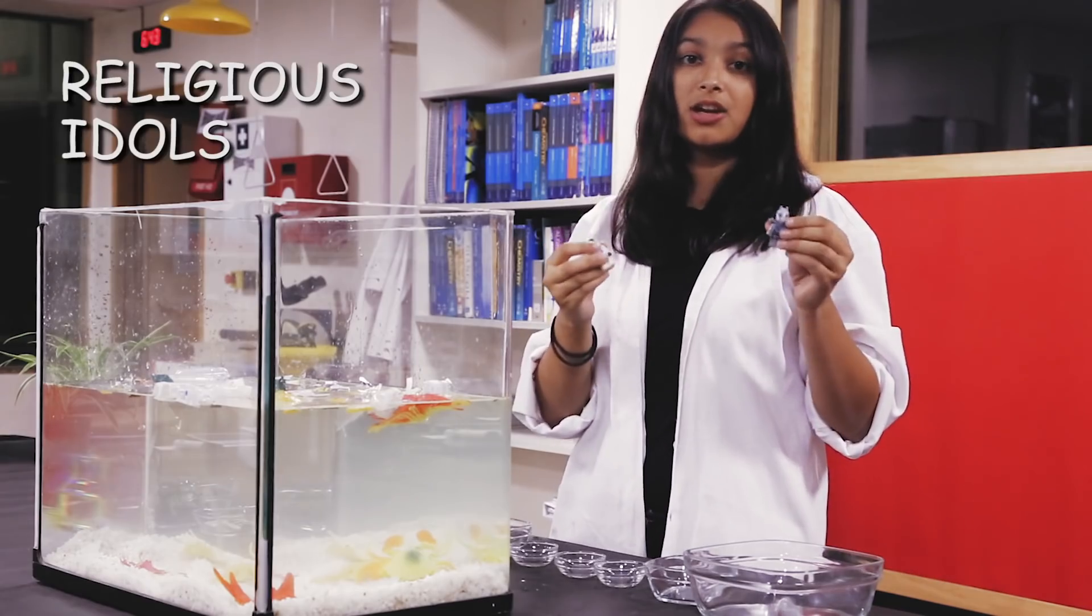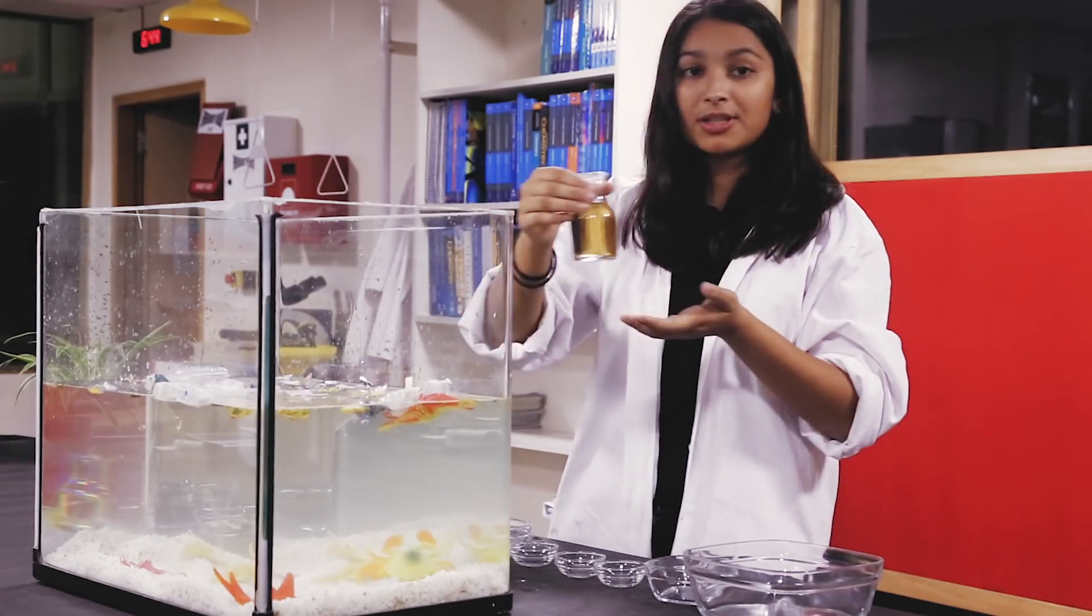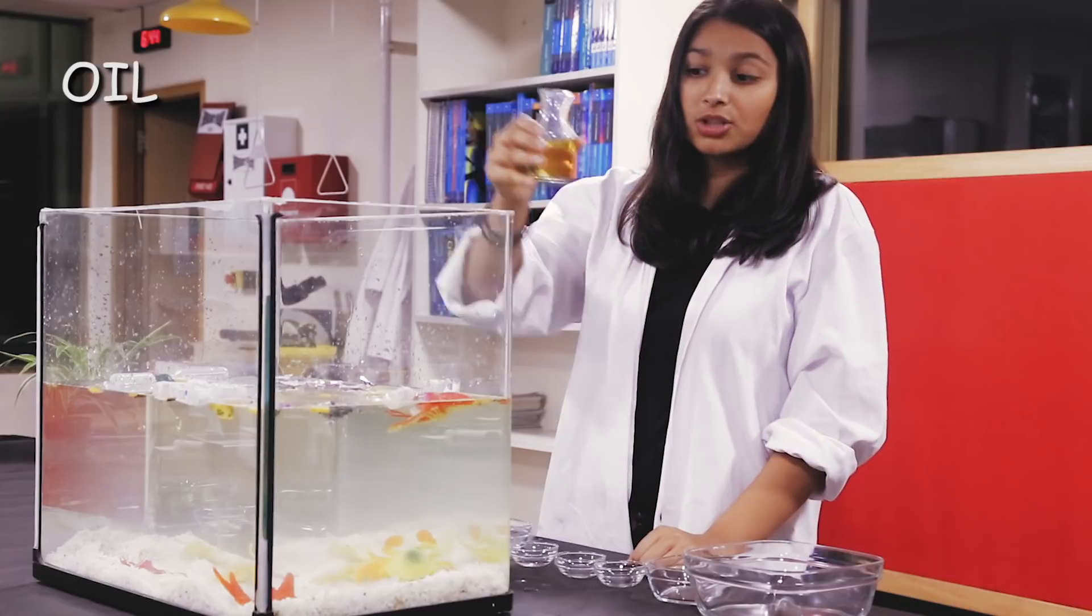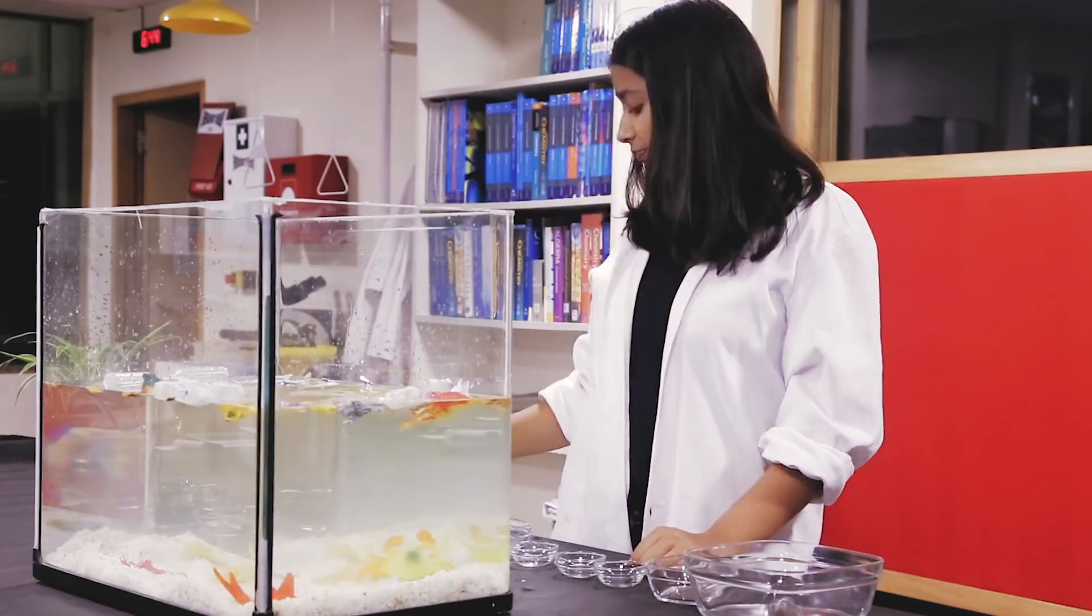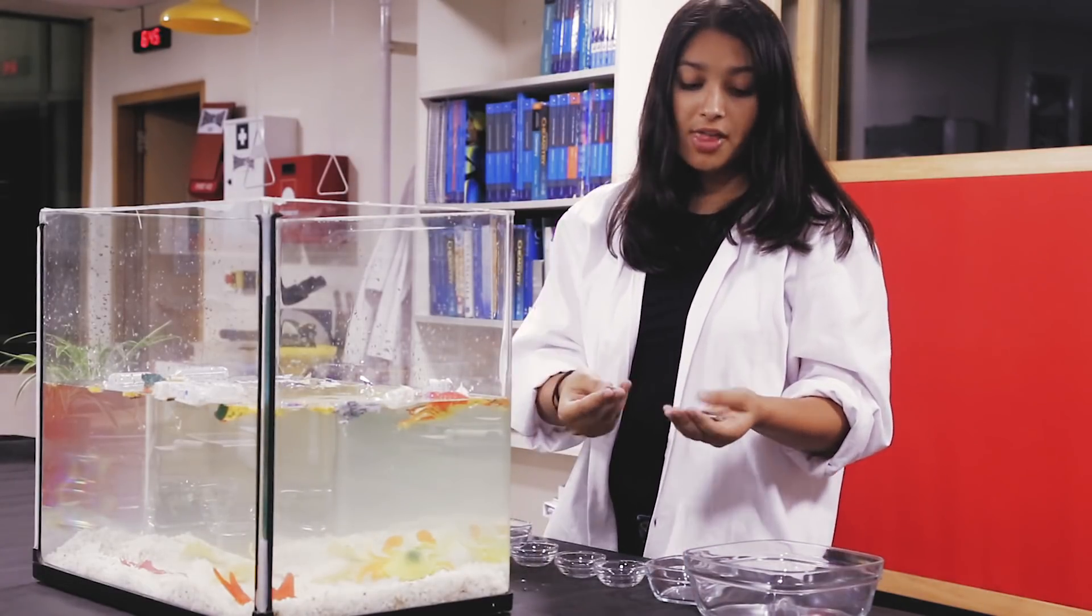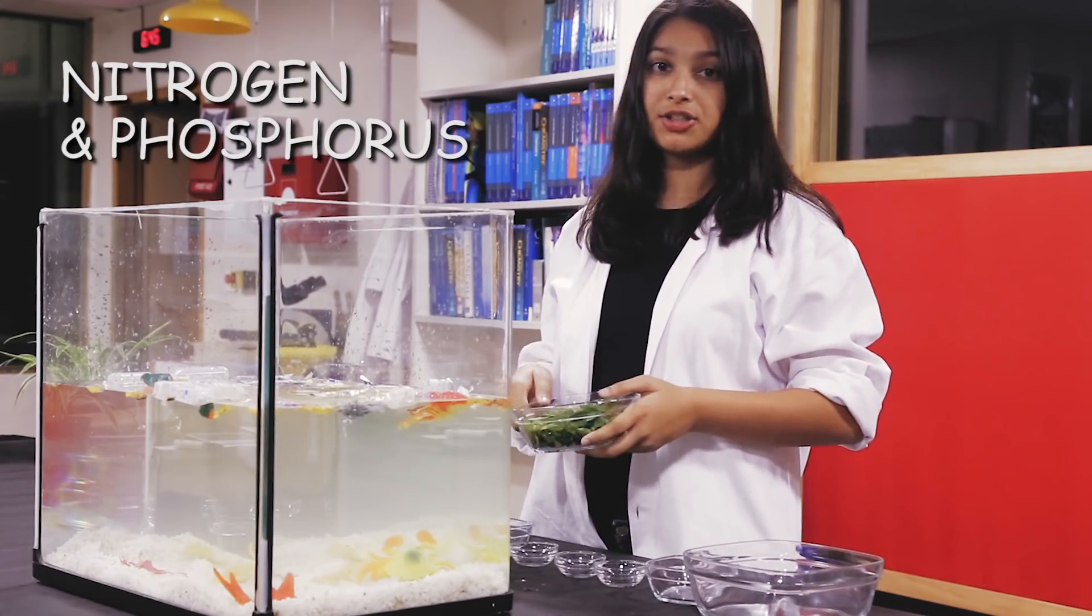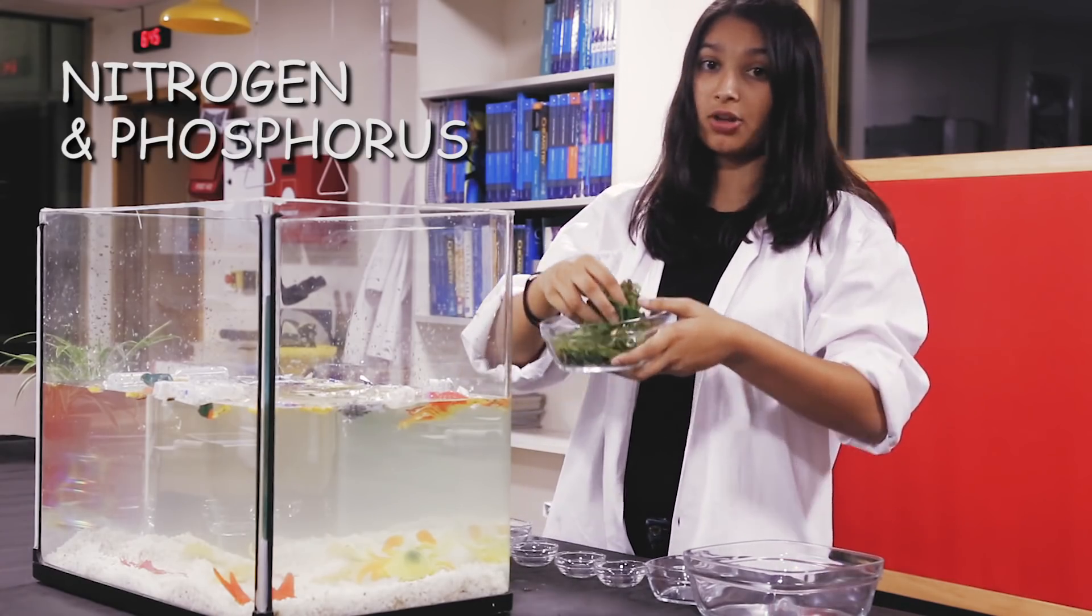This to represent religious idols. This here represents fertilizers. And this is for oils, from various oil spills that we have. From fertilizer into the water runoff, that tends to cause phosphorus and nitrogen atoms that are added to the water. That creates algal blooms.